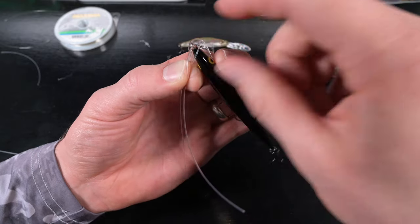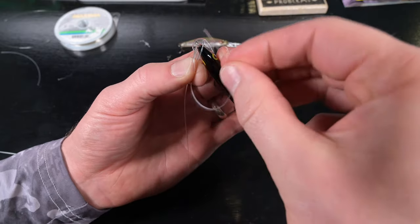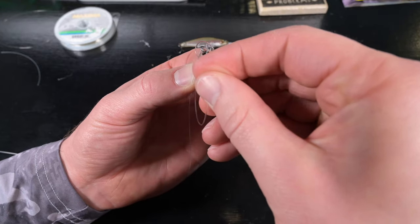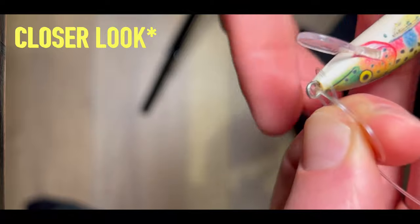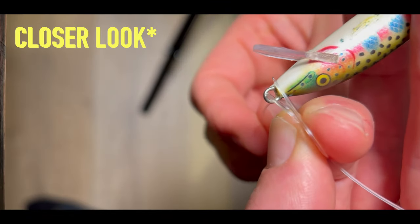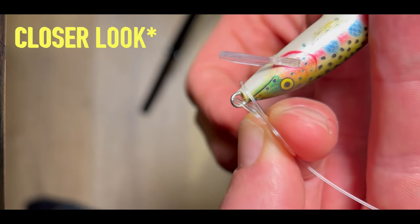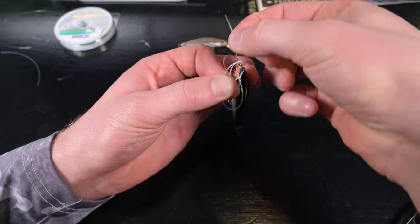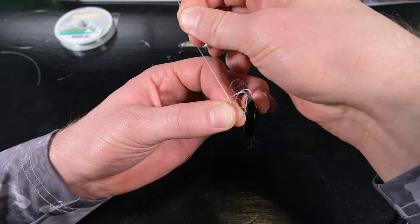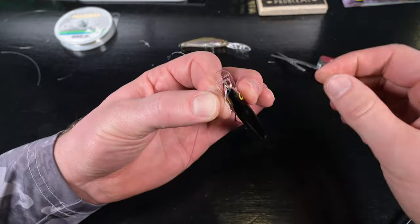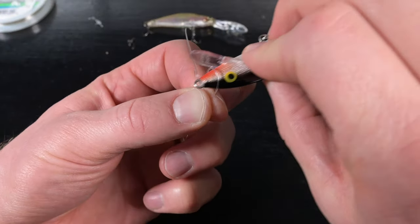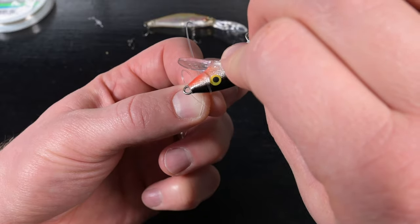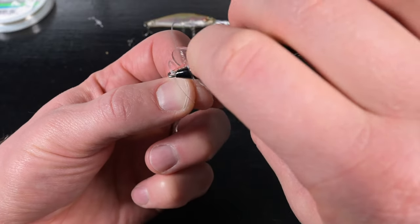The loop up front is going through the eye of the lure. Now we take the bitter end and split the two loops just like that. Pull the bitter end tight and wedge it between our thumb and pointer finger.